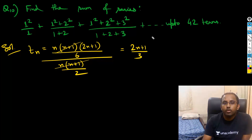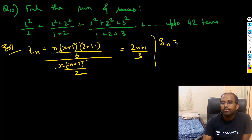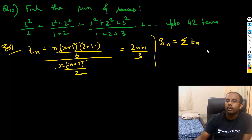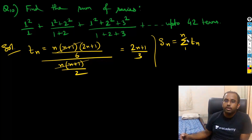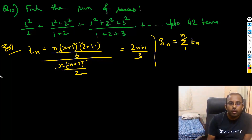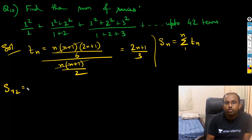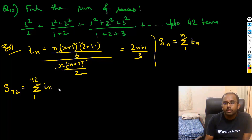I need to get the value of the sum. So Sₙ is the summation of Tₙ from 1 to n terms — I just need to add those n terms. To calculate S₄₂, that is basically the sum from 1 to 42 of Tₙ, where Tₙ = (2n+1)/3.